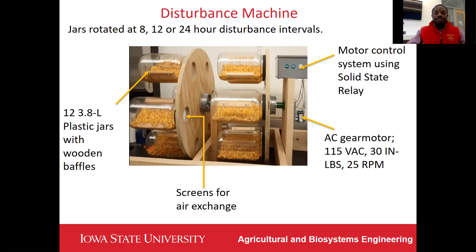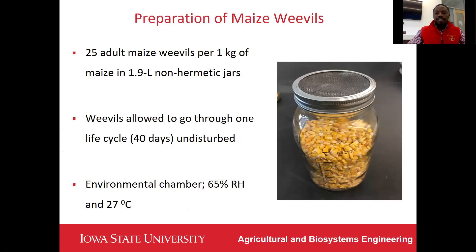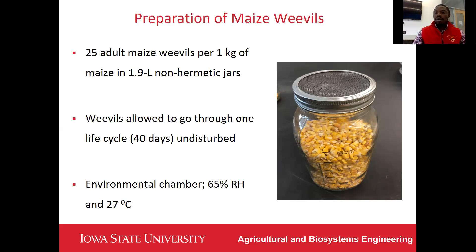For the second objective, one kilogram of maize and 25 adult maize weavers in 1.9-liter non-hermetical glass jars with screens covering the cut-out holes of the lids were allowed to reproduce and be disturbed for one life cycle — that is 40 days — in a chamber maintained at 65% relative humidity and 27 degrees Celsius. This simulated the inversion of mature maize in the field by adult maize weavers and the pre-emergent stages that get carried along with the maize kernels into storage structures.